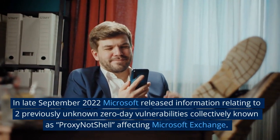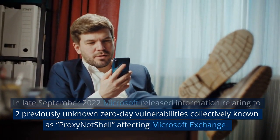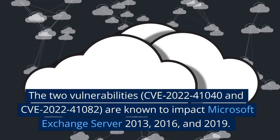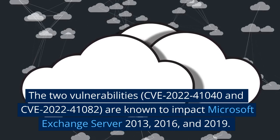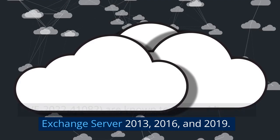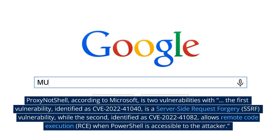Vulnerability number seven — ProxyNotShell, CVE-2022-41082. In late September 2022, Microsoft released information relating to two previously unknown zero-day vulnerabilities collectively known as ProxyNotShell, affecting Microsoft Exchange. The two vulnerabilities, CVE-2022-41040 and CVE-2022-41082, are known to impact Microsoft Exchange Server 2013, 2016, and 2019. The first, CVE-2022-41040, is a server-side request forgery (SSRF) vulnerability, while CVE-2022-41082 allows remote code execution (RCE) when PowerShell is accessible to the attacker.